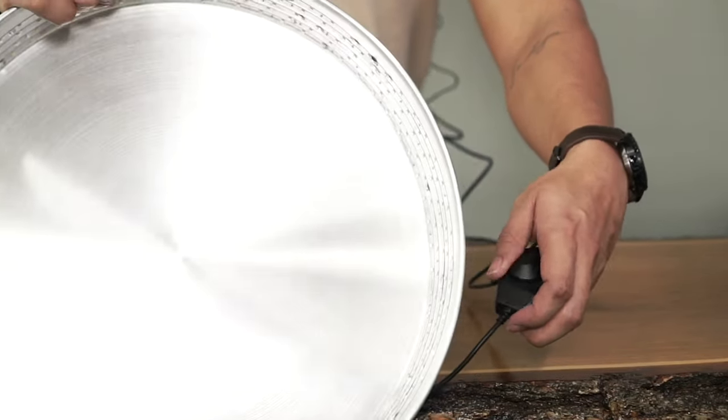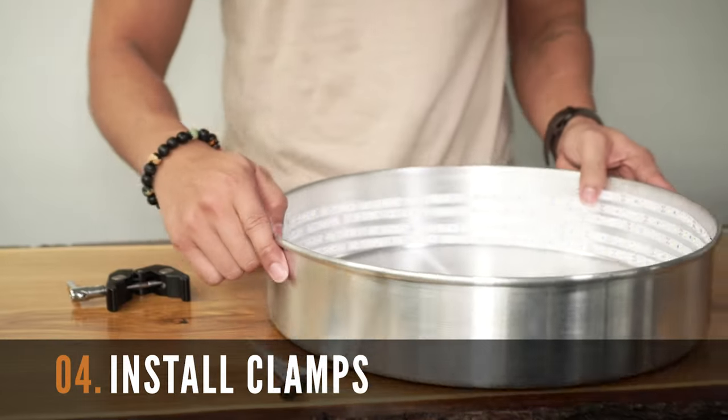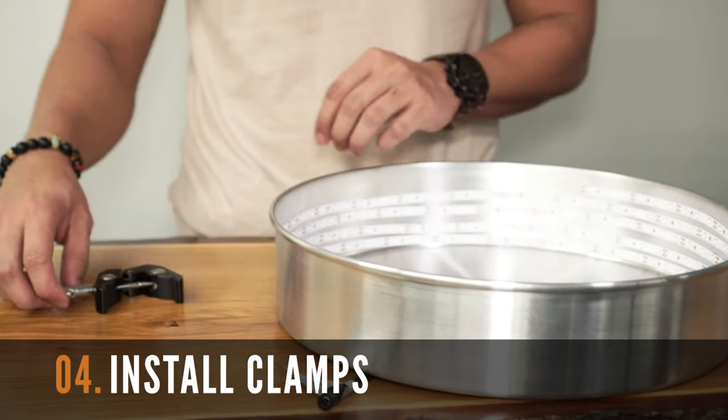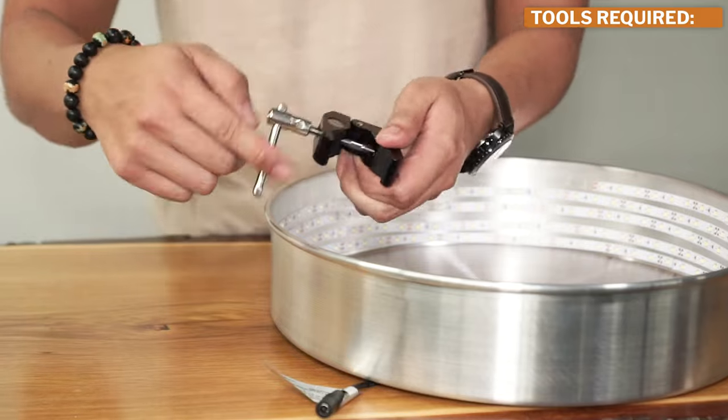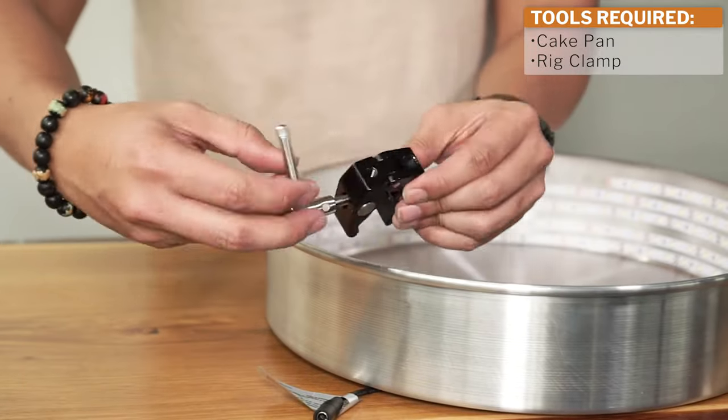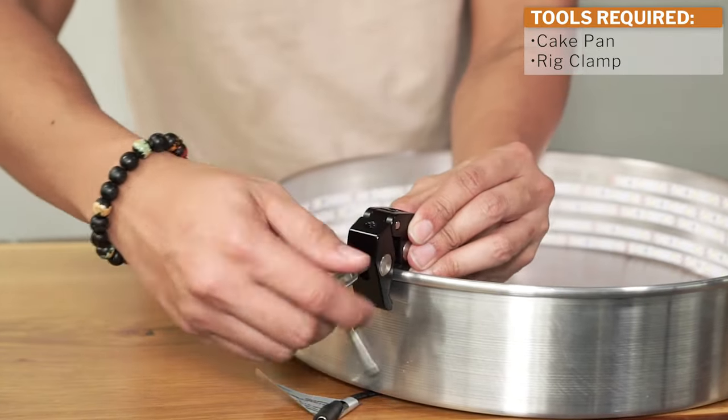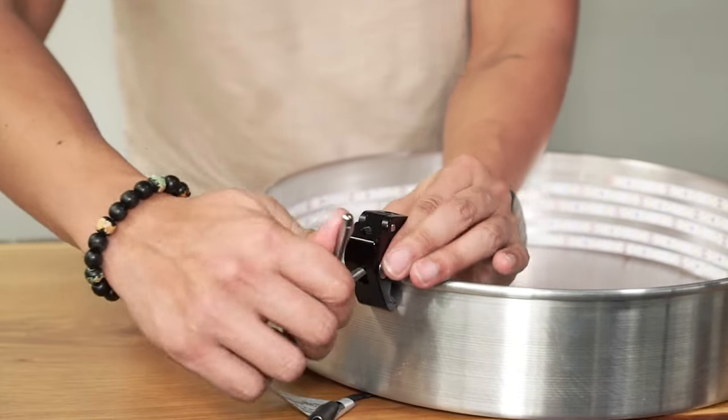Here it is at 100%. Next, install the rig clamp on your aluminum cake pan, careful to ensure you're not puncturing or squeezing the brand new LED strips that you just installed.